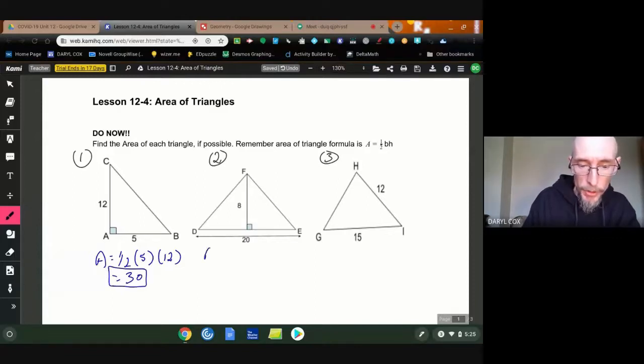For triangle number two, again, half the base times height. The base is the entire twenty here, okay? The height is eight. So half of twenty is ten. Ten times eight is eighty.